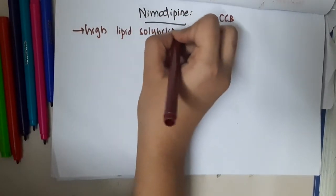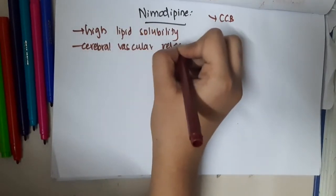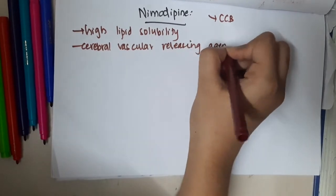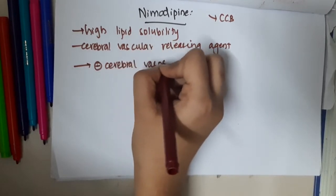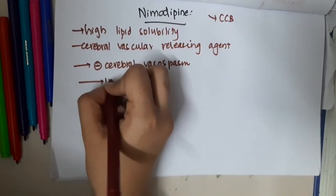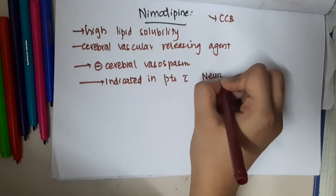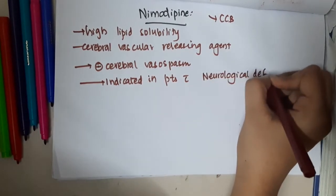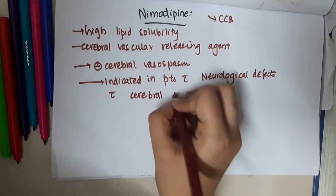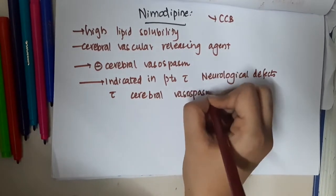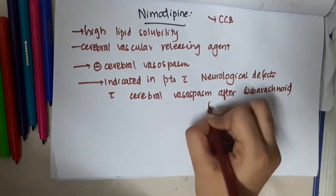Because of its high lipid solubility, nimodipine acts as a cerebral vasodilating agent and inhibits cerebral vasospasm. It is indicated in patients with neurological deficits due to cerebral vasospasm, and it is especially used after subarachnoid hemorrhage.